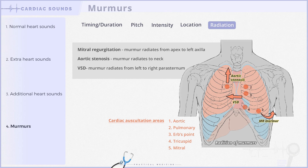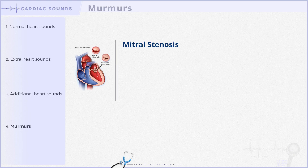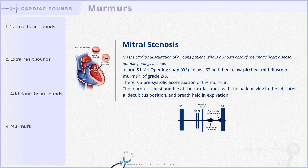Let's put all the features together in a clinical scenario. Suppose it is a young patient diagnosed with mitral stenosis secondary to rheumatic heart disease. On cardiac auscultation, notable findings include a loud first heart sound, an opening snap following S2, and then a low-pitched mid-diastolic murmur of grade 2/6 intensity. Additionally, there is a presystolic accentuation of the murmur. The murmur is best audible at the cardiac apex, with the patient lying in the left lateral decubitus position and breath held in expiration.